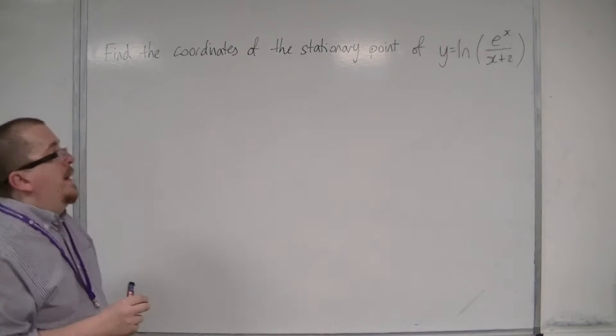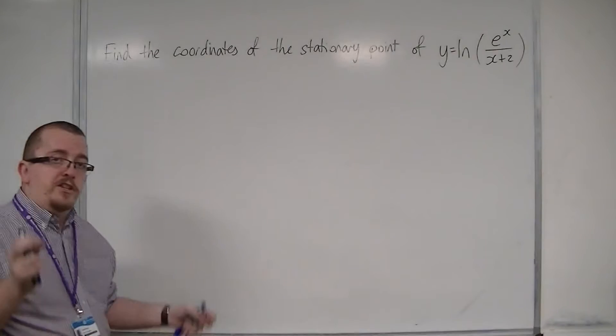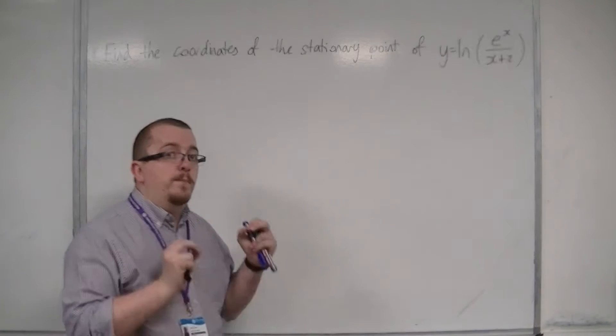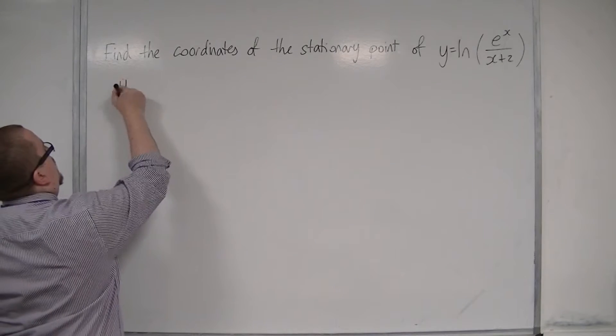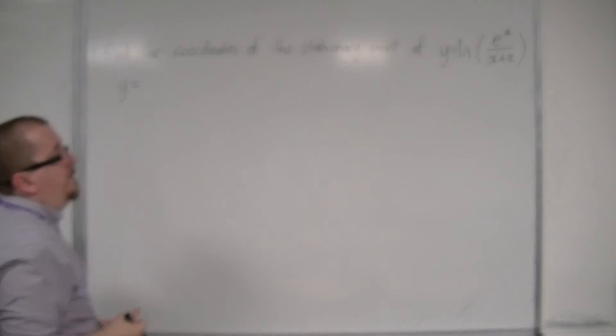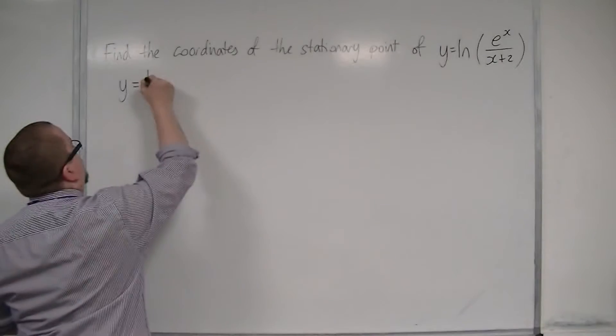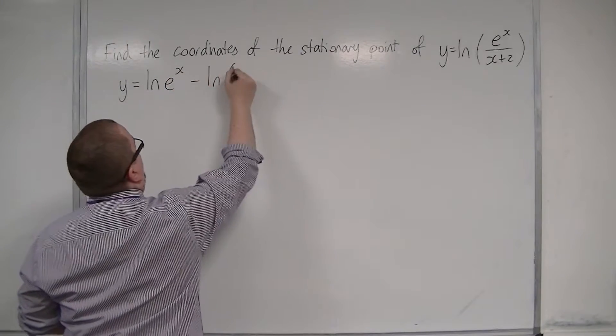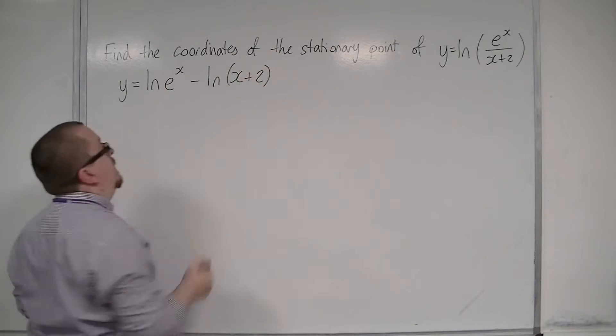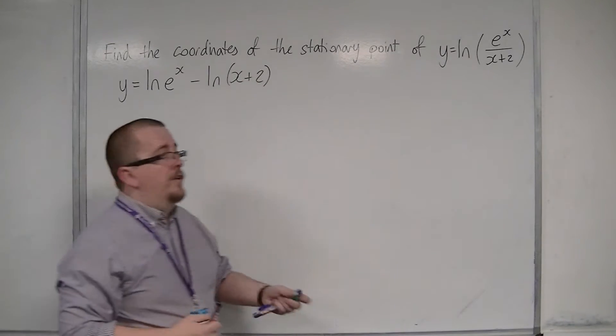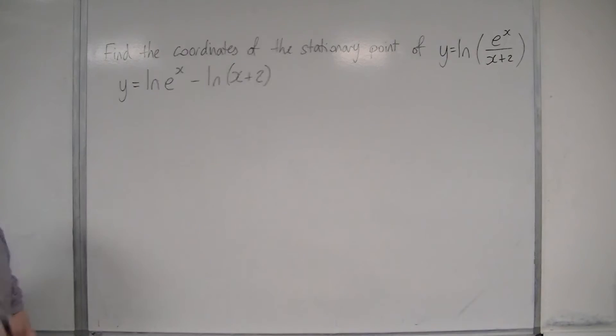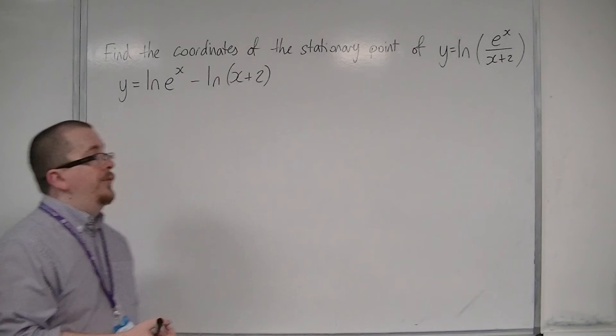The second method, the preferred method, is to really spot that there is a log law that you can employ here. So, I'm going to rewrite y as log of e to the x take away log of x plus 2. Because you have log of a over b, this is log of a minus log of b using the log laws.